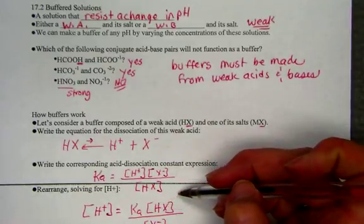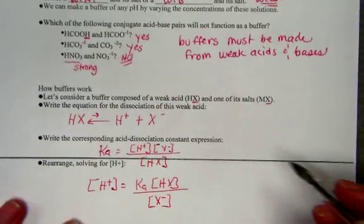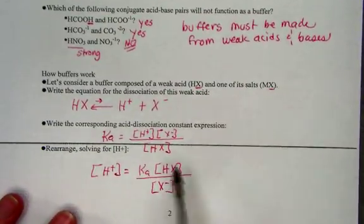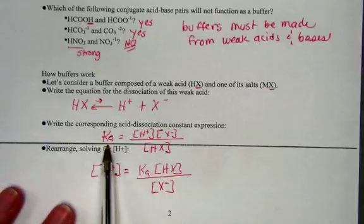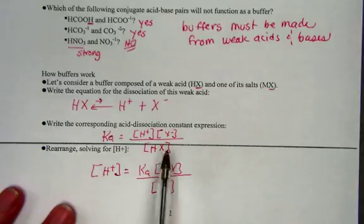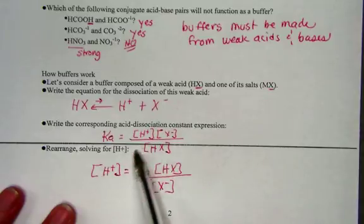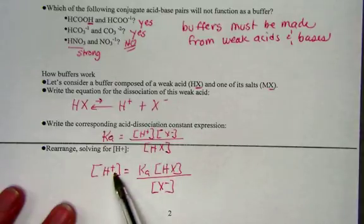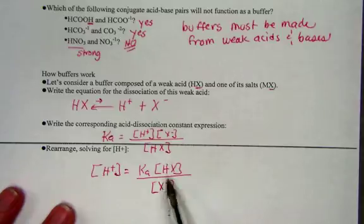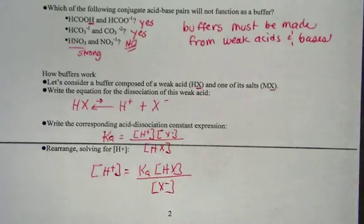The HX represents the molecular form of the acid and the X negative represents its conjugate base. We have manipulated Ka equal to H plus times X negative over HX and just solve for hydrogen ion, placing it to the left of the equal. And what happens, we have Ka multiplied by HX divided by the X negative, simplifies algebraically our formula.